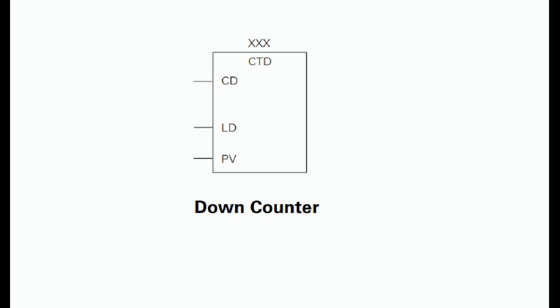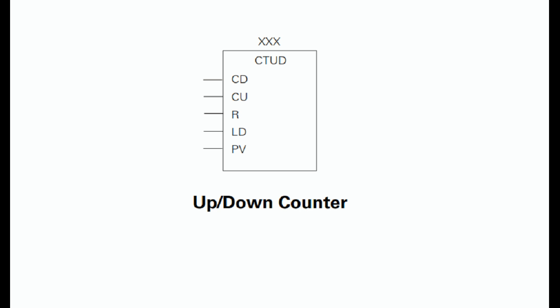Up/down counter: The up or down counter counts up or down from the preset value each time either CD or CU transitions from a logic 0 to a logic 1. When the current value is equal to the preset value, the output Q turns on. When the current value (CV) is equal to 0, the output QD turns on. The counter loads the current value (CV) with the preset value (PV) when the load input (LD) is enabled.